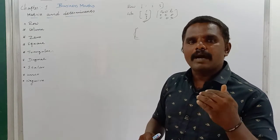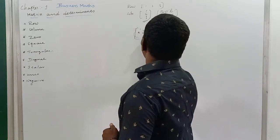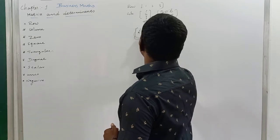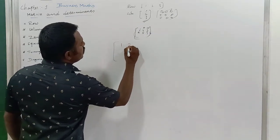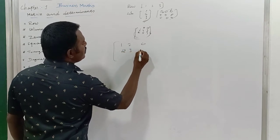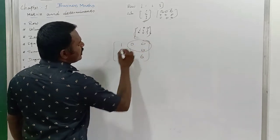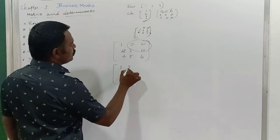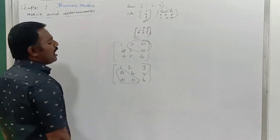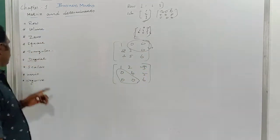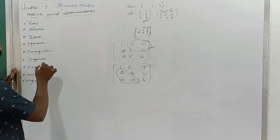There are two types of triangular matrix: upper triangular matrix and lower triangular matrix. An upper triangular matrix has elements like [1, 2, 3; 0, 4, 5; 0, 0, 6] where entries below the leading diagonal are zero. A lower triangular matrix has elements like [1, 0, 0; 2, 3, 0; 4, 5, 6] where entries above the leading diagonal are zero. So triangular matrix has these two types.